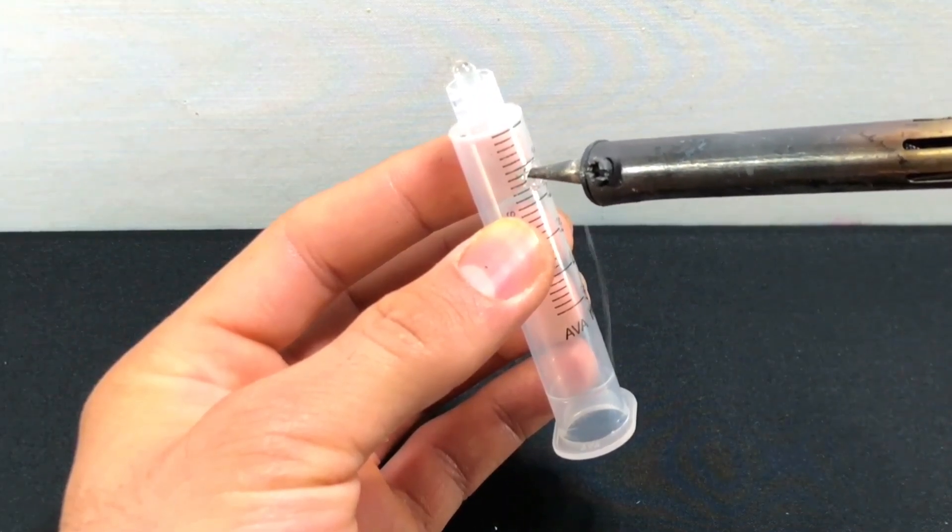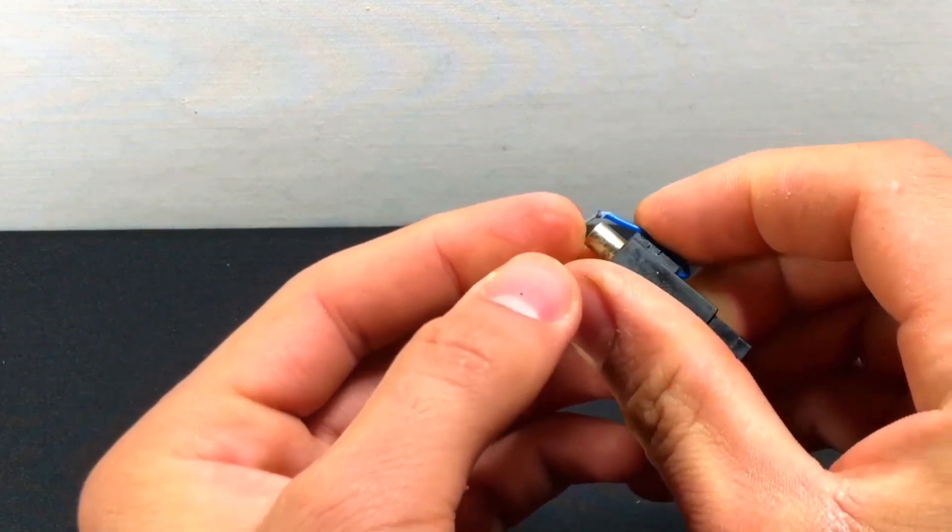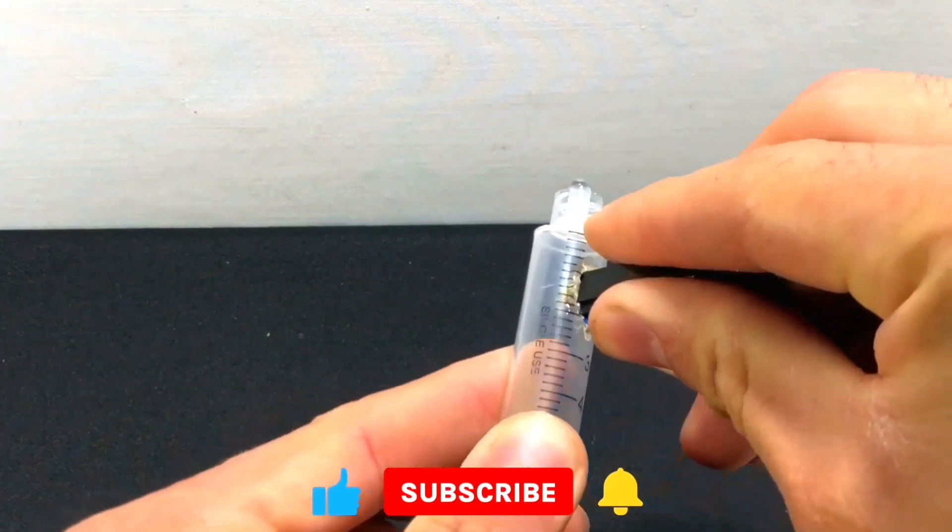Close the outlet of the syringe using hot glue and create a hole in its body using a soldering machine as in the video, and then stick a lighter igniter inside that hole using hot glue as shown in the video.